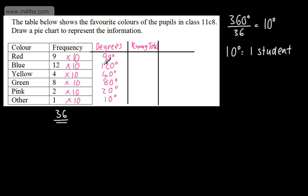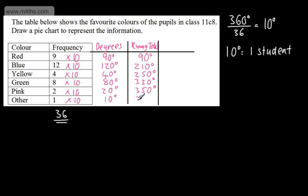These should add up to 360 — if they don't, check what you've done wrong. For the running total: 90 degrees, then adding 120 gives 210 degrees, adding 40 gives 250 degrees, adding 80 gives 330 degrees, adding 20 gives 350 degrees, and finally adding 10 gives 360 degrees.